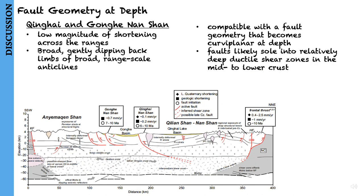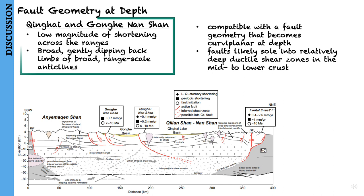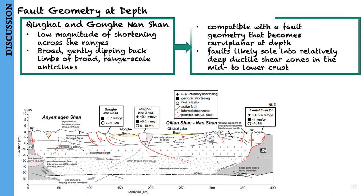They discuss fault geometries at depth. Coupled with the low magnitude of shortening across the Qinghai and Gonghe-Nanshan, the broad gently dipping back limbs and range-scale anticlines are compatible with a fault geometry that becomes curviplanar at depth and imply that faults likely sole into relatively deep ductile shear zones in the mid to lower crust.